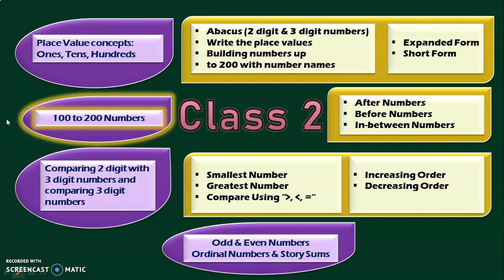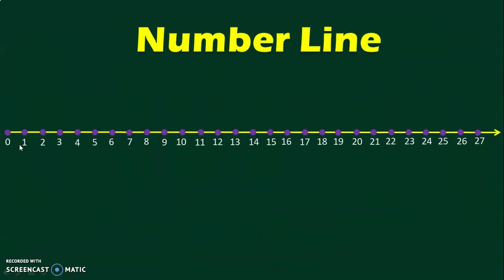In my channel, I have also dealt with numbers 200 to 1000 in separate videos. Links for all of that are provided below in the description box. We must have dealt with after numbers, before numbers, and between numbers in class 1 itself. Let us do a quick revision of these concepts using number lines. Here we have a number line with numbers from 0 to 27. A number line is a very useful tool to understand after, before, and between numbers.